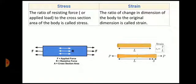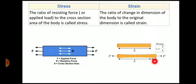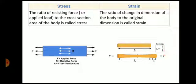Now strain: the ratio of change in dimension of the body to the original dimension is called strain. After application of force, the length is changed by delta. So delta divided by the original length is called strain.